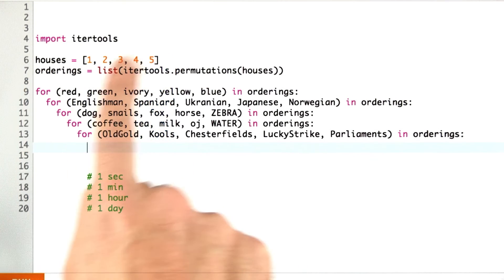We already did constraint number one, which was houses equals 1, 2, 3, 4, 5. Now let's do constraint number two, which is that the Englishman lives in the red house.